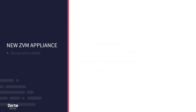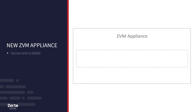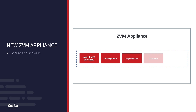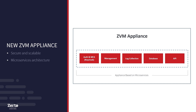Built for security and scalability, the ZVM appliance is an all-in-one appliance. Authentication is through KeyCloak, a popular open-source solution for secure identity and access management. It includes a management layer, log collection, database, and APIs. Its containerized microservices architecture enhances stability while eliminating single points of failure.